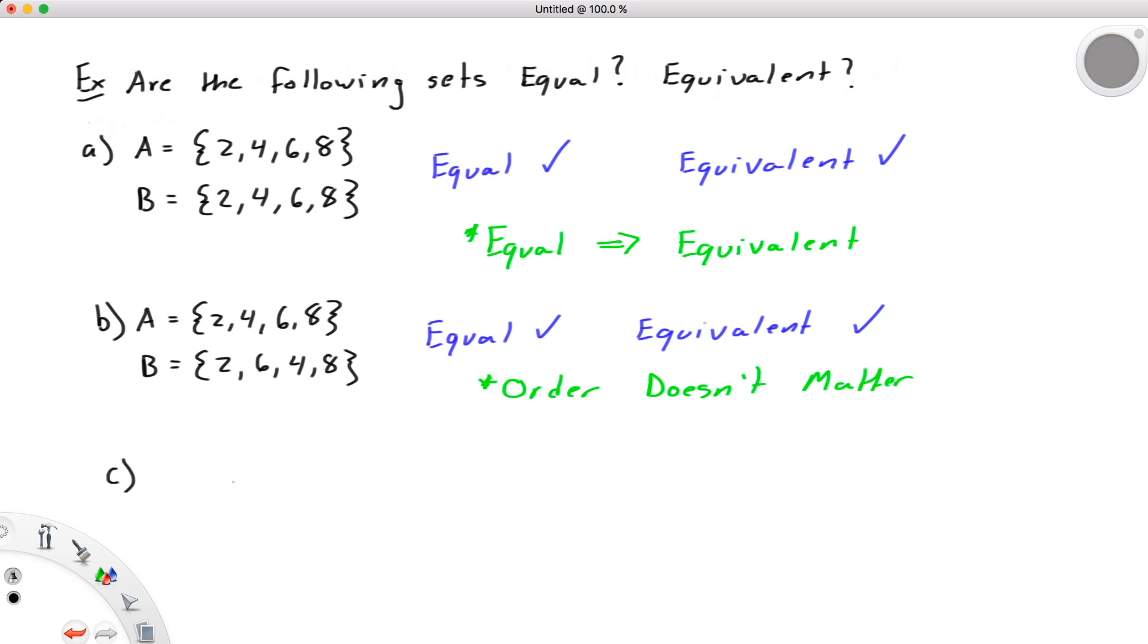Finally, say A = {2, 4, 6, 8} and B = {1, 3, 5, 7}. These two sets are not equal, since, for example, 2 is not an element of B, but 2 is an element of A. They are equivalent, however, since each has four elements. They do have the same cardinality.